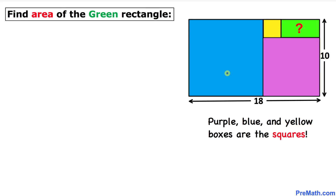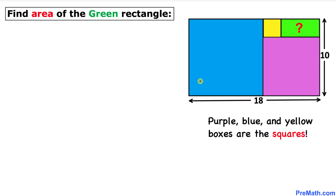Welcome to Pre-Math. In this video tutorial, we have a big rectangle with dimensions 10 and 18. As you can see in this figure, it consists of three squares — blue, purple, and yellow — and a green rectangle. We are going to calculate the area of this green rectangle, so let's get started with the solution.